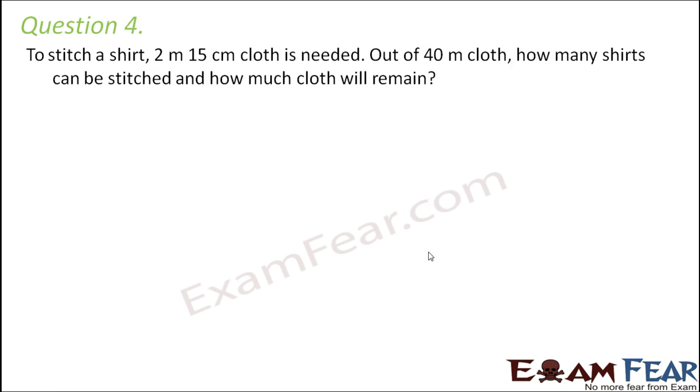Question number 4. To stitch a shirt, 2 meters 15 centimeters cloth is needed. Out of 40 meters cloth, how many shirts can be stitched and how much cloth will remain? Okay, so how much cloth do you need to stitch one shirt? So for one shirt, we need 2 meters 15 centimeters. Now let us convert this into one single unit. Let's say we convert the entire thing into centimeters.